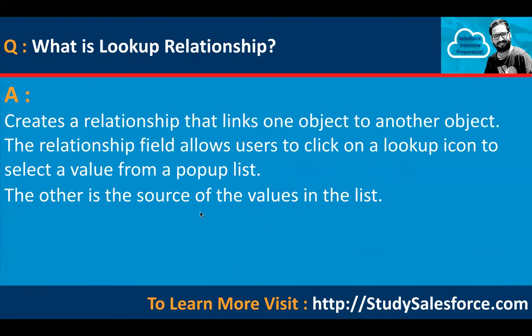What is a lookup relationship? It creates a relationship that links one object to another object. The relationship field allows users to click on a lookup icon to select a value from a pop-up list. For example, if you have two objects — college and student — one college can have many students. On the student object you create a lookup relationship that looks up to college. The lookup field is created on the child object (the 'many' side) and it looks up to the parent object.